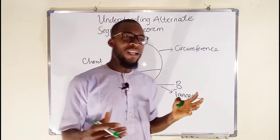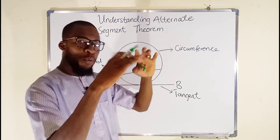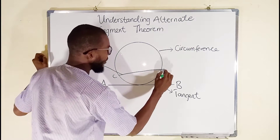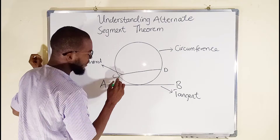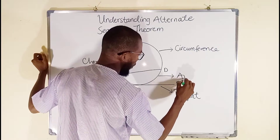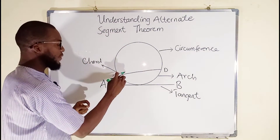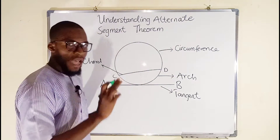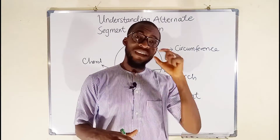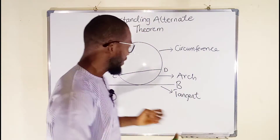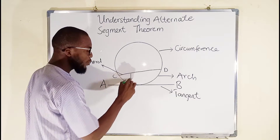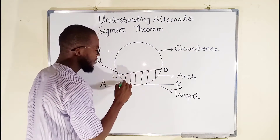We also need to define an arc. An arc is any portion of the circumference. Let me call this point C and this point D. From C to D, this curve right here is an arc. C to D in the other direction is also an arc. A segment is the area bounded by the chord and the arc. We have arc CD and chord CD, so this portion right here is a segment.